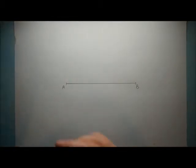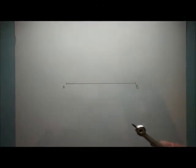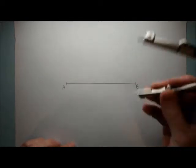To do this, it's called a construction, we're going to use a pair of compasses and a straight edge from a ruler and a sharp pencil. So first of all,